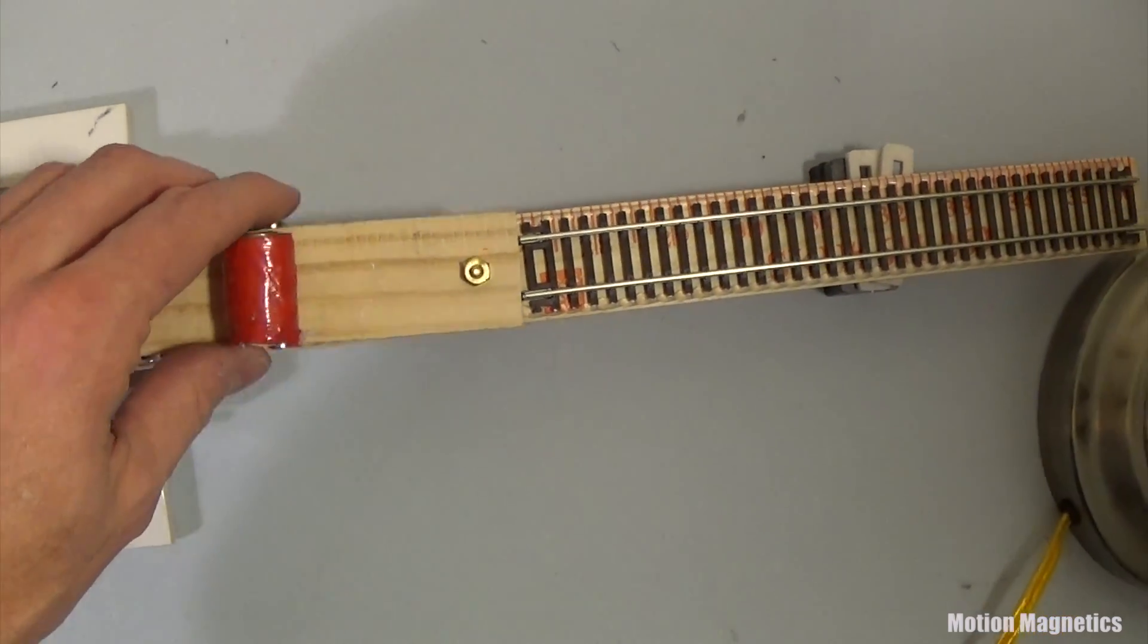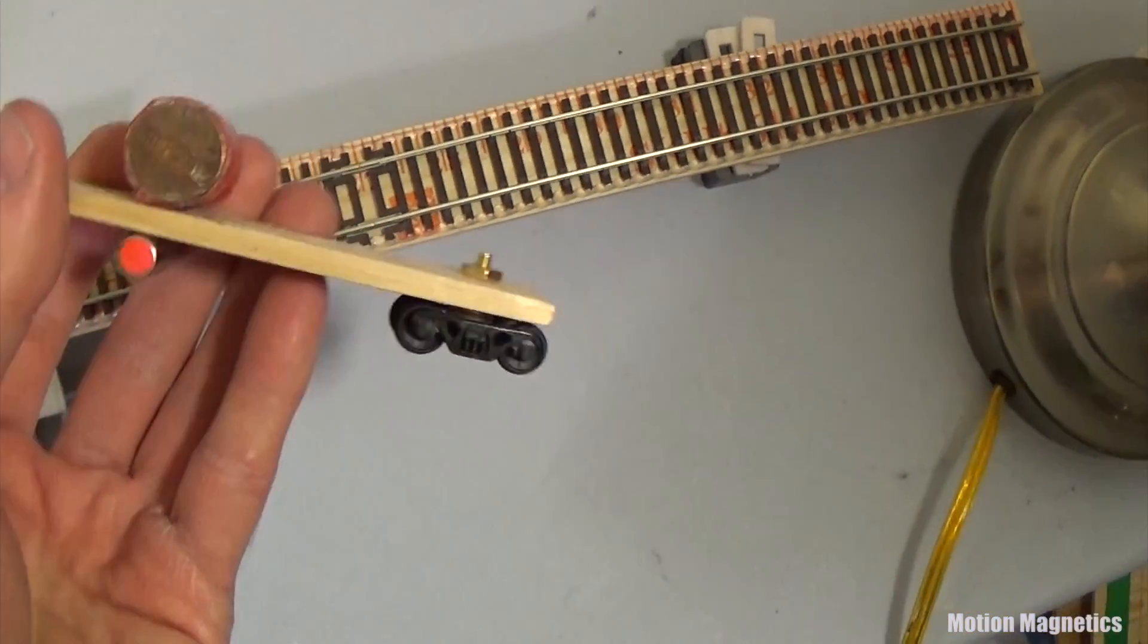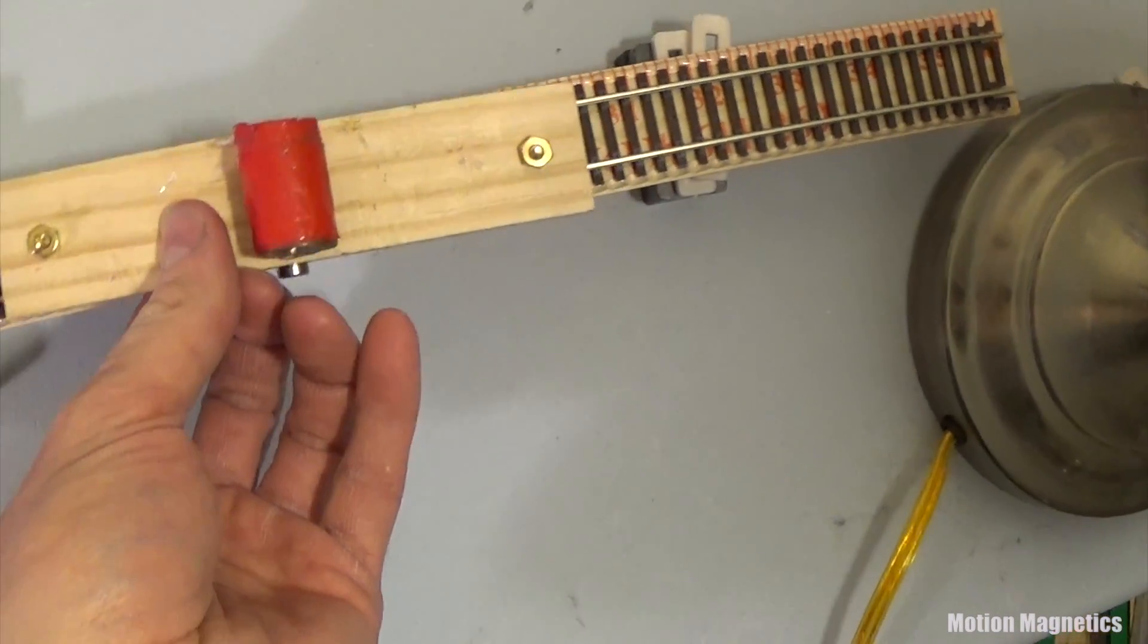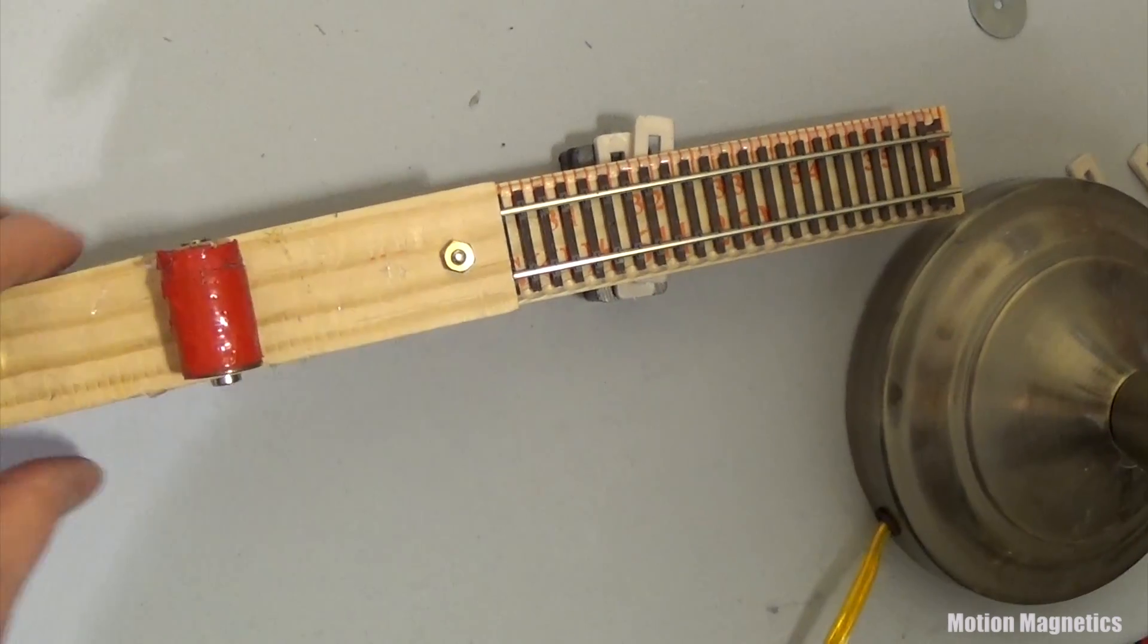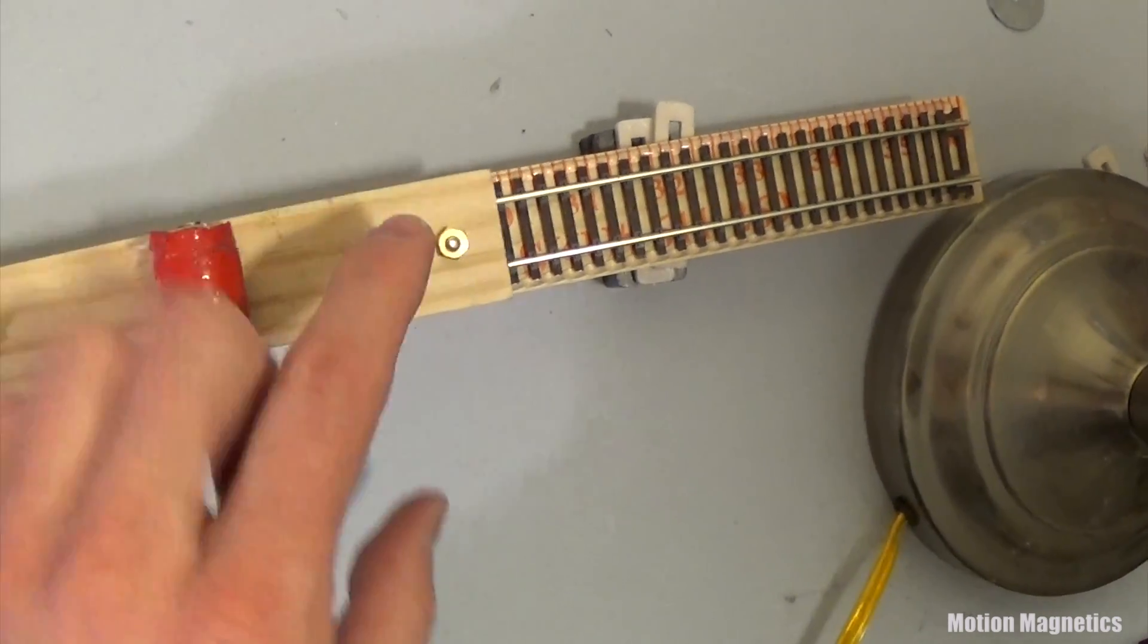The second is to see if the repulsion at the entry point of the magnets around the track is light enough that the acceleration at the exit point of the cart is great enough to cycle again for continuous motion.